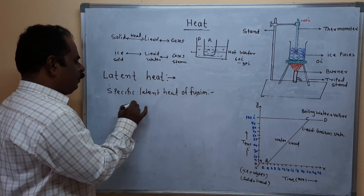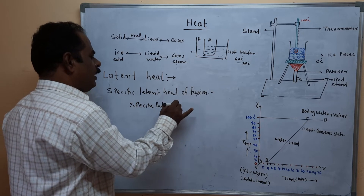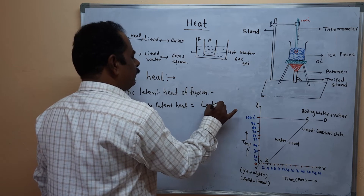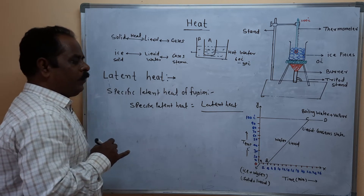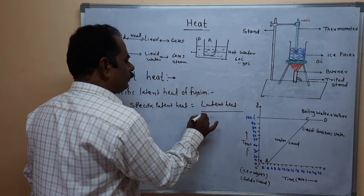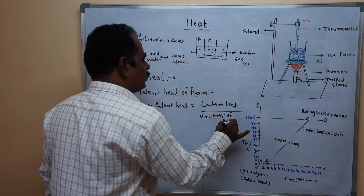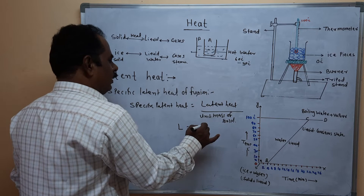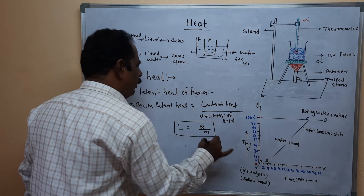Specific latent heat L is defined as the amount of heat Q absorbed divided by the unit mass M of the solid. Therefore, L is equal to Q divided by M.